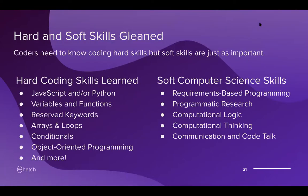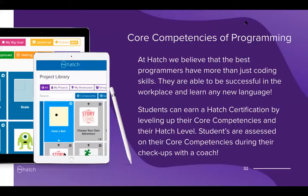The skills report eventually leads to a certification students can achieve. Coders need both hard and soft skills, and at Hatch we feel this is very important. Hard coding skills include JavaScript and Python, and concepts like variables, functions, reserved keywords, arrays, loops, conditionals, and object-oriented programming. Soft computer science skills include requirements-based programming, programmatic research, computational logic thinking, and communication. Students can earn a Hatch certification by leveling up their core competencies and Hatch level, and are assessed on core competencies during their check-in with a coach.